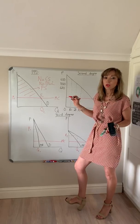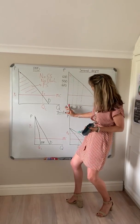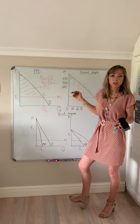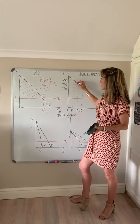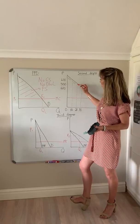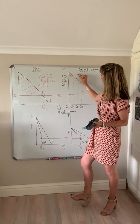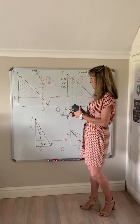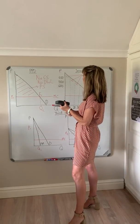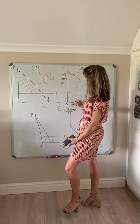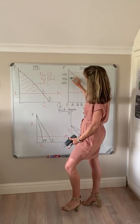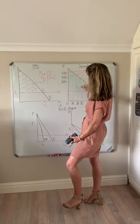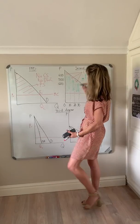You'll still have some consumer surplus left. Within the first group, someone willing to pay 650 Rand only pays 600, so there's consumer surplus remaining within each group. Producer surplus is the difference between the price actually charged — 600 for the first group — and the marginal cost, forming a large area. Likewise for the second and third groups, these areas become producer surplus.